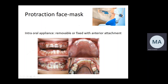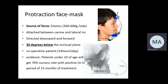The elastics should provide about 300 to 600 grams of force per side. The attachment is positioned between the lateral and the canine, directed about 20 to 30 degrees below the occlusal plane. The patient is supposed to wear the appliance for 14 hours — essentially evening and all night. Evidence shows patients under 10 years of age have about a 70% success rate with positive overjet at the end of treatment, though studies typically only followed patients for about 15 months.